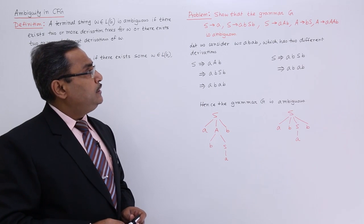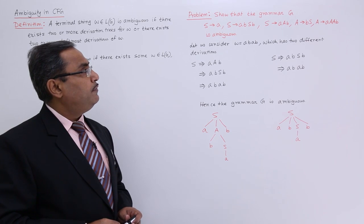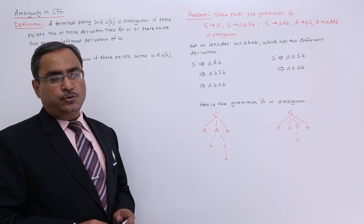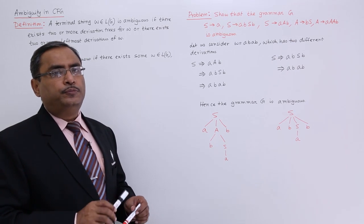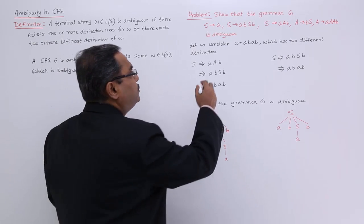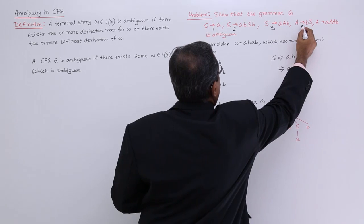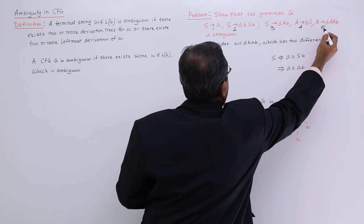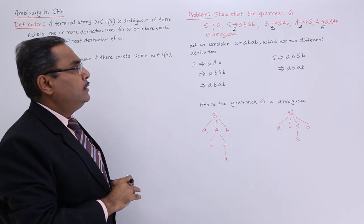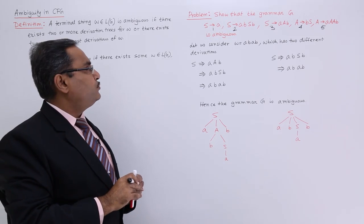Show that the grammar G, with production rules given, is ambiguous. So it has to be proved. I am just putting the production numbers, so we are having 5 productions.